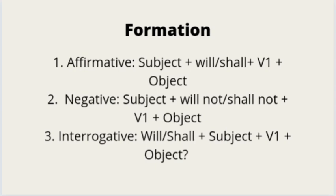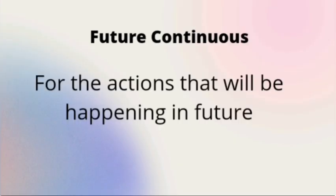In modern English, 'will' is frequently used with all persons. If your sentence is negative: subject, will not or shall not, first form of the verb, and object. In case the sentence is interrogative, it begins with will or shall, subject, first form of the verb, and object.